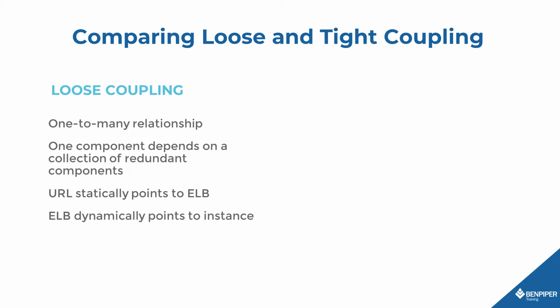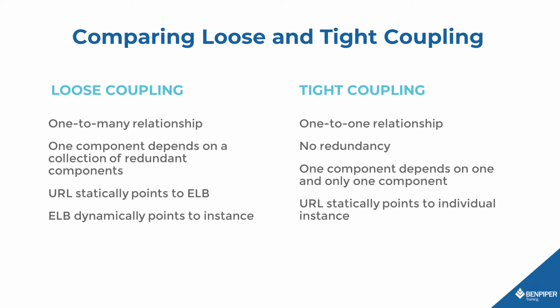The thing that makes this work, of course, is the ELB. Without the ELB, the only way a user could access the application is to use a URL that takes them directly to a single instance. In that case, the URL would be tied to a single instance. This is an example of tight coupling. There's a one-to-one relationship between the URL and the instance. In tight coupling, there's no redundancy, so if that instance goes down, the entire application goes down.